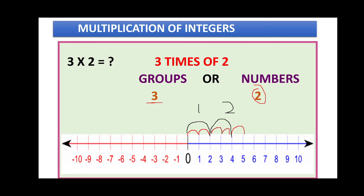Then from four to five and five to six, which makes the third group. Two numbers, three groups — our result is six because three groups are completed. So six is our result. In this way we can multiply on the number line.